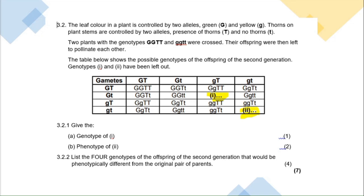The phenotype is what you physically see — not the letters. Is it going to be a green plant, yellow plant, with thorns or no thorns? For question 3.2.2, you must list four genotypes of offspring in the second generation that are phenotypically and genotypically different from the parents. Look at the second paragraph of the question: the parents' genotypes were capital G capital T (green with thorns) crossed with small g small t (yellow, no thorns).